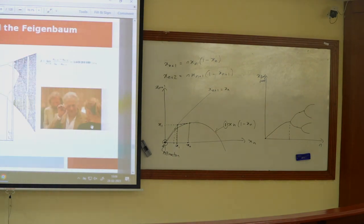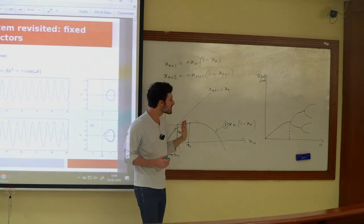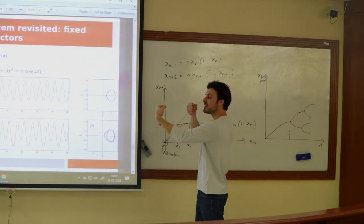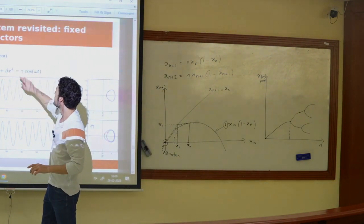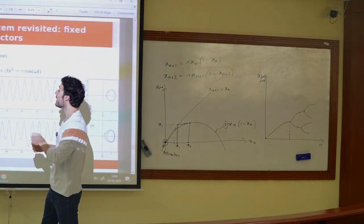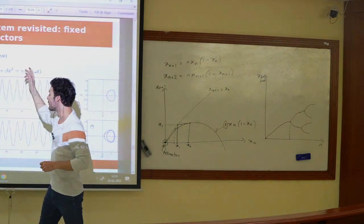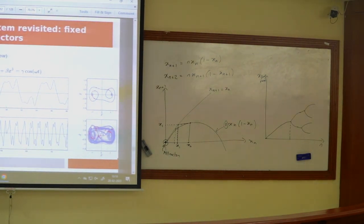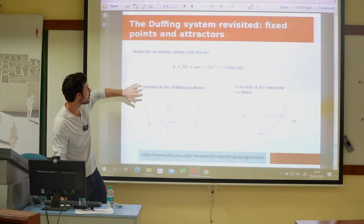We're going to explore what period doubling means on a more physical basis by revisiting the Duffing oscillator — a nonlinear spring with a driving force. We already saw it exhibits the same period doubling behavior as the logistic map: regular periodic motion, then period-2, then period-4, then chaos. But we'll be interested in the behavior of its fixed points and attractors.